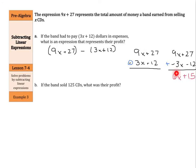Now, if the band sold 125 CDs, what was their profit? So let's take the expression 6x + 15. Remember, x represented the number of CDs, and we're going to have 125 CDs. So if we put in 125 for x, we'd have 6 times 125 + 15. And 6 times 125 is 750. Don't forget to add the 15 at the end, and you get a profit of $765.